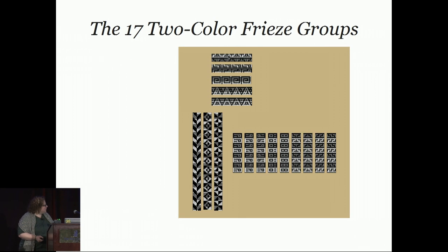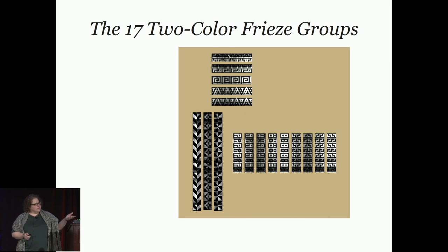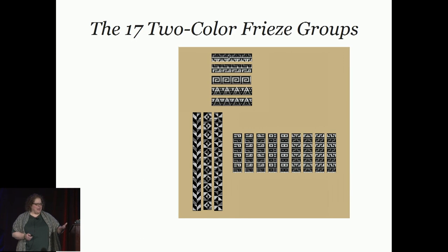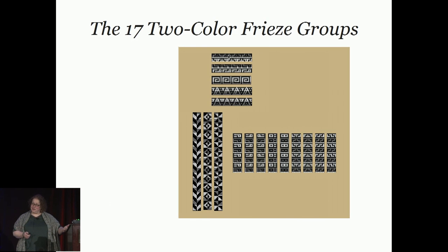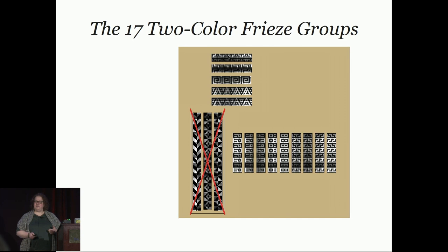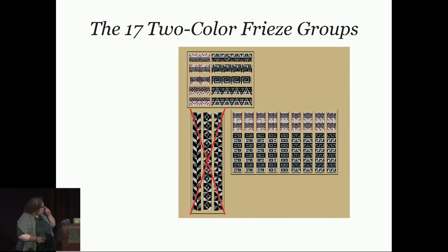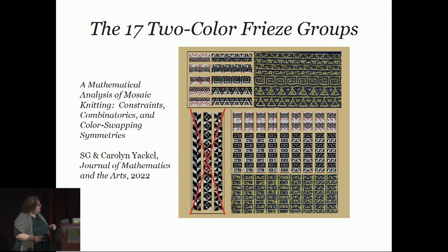The thing that turns out to be really fascinating is that this is a little bit like the Shiburi situation that Carolyn was showing this morning. You can't get all of them, because of mechanical reasons related to how mosaic knitting works. If you are interested, please ask either of us — we will be happy to tell you, and it's not that complicated. These three groups turn out to be impossible, and the others have some constraints about which way you can arrange them. But it turns out you can turn them into patterns. These grids show the actual knitting mechanism by which you do it. And we wrote a paper.